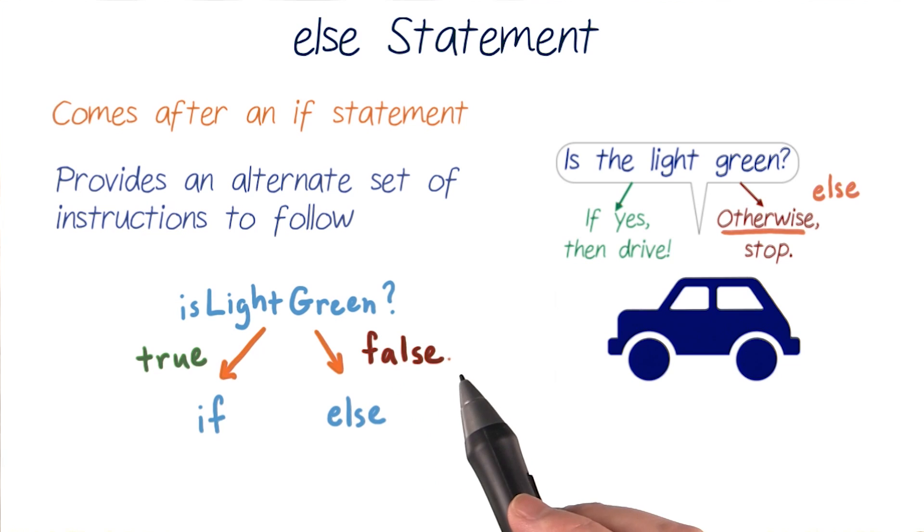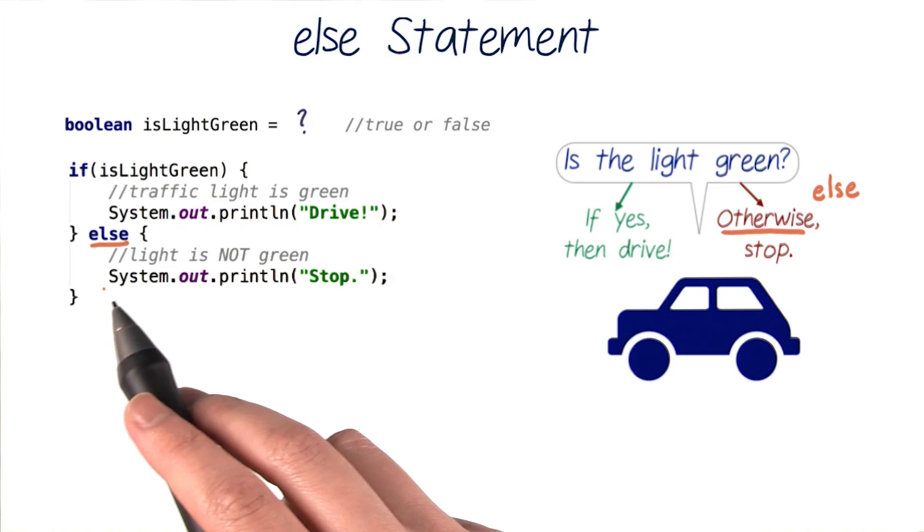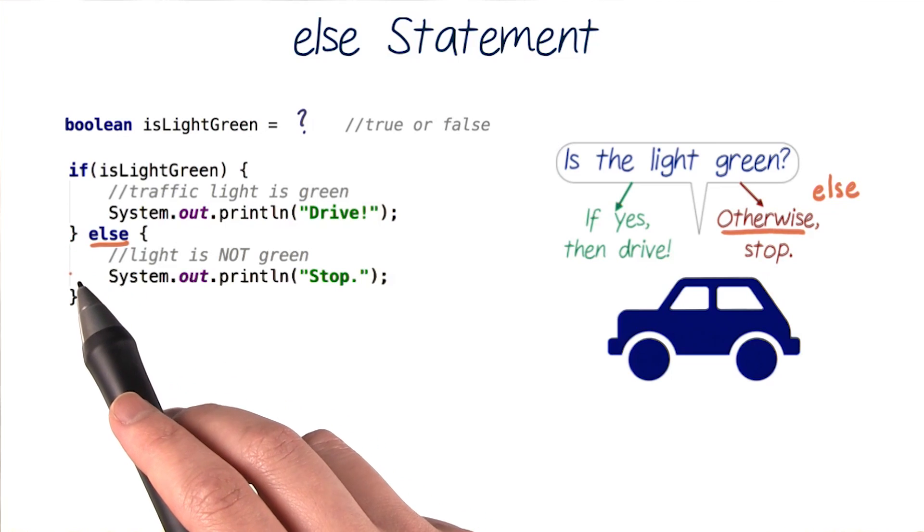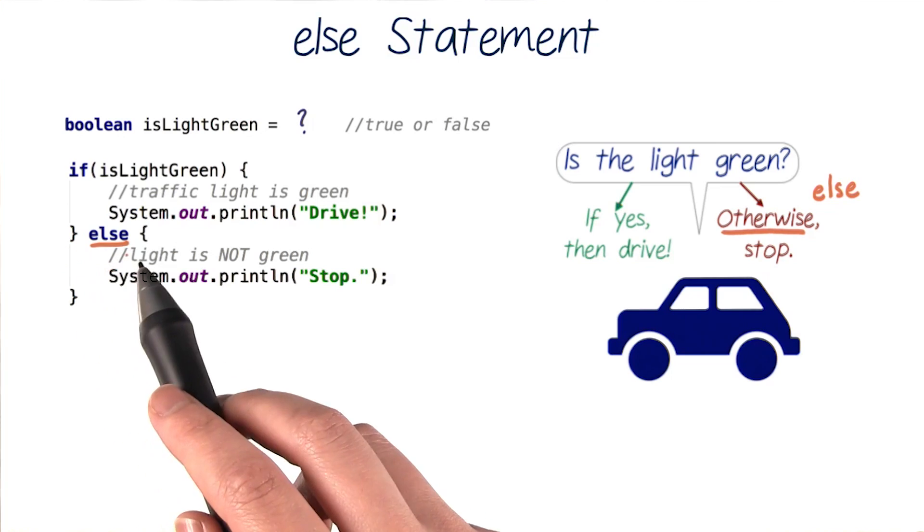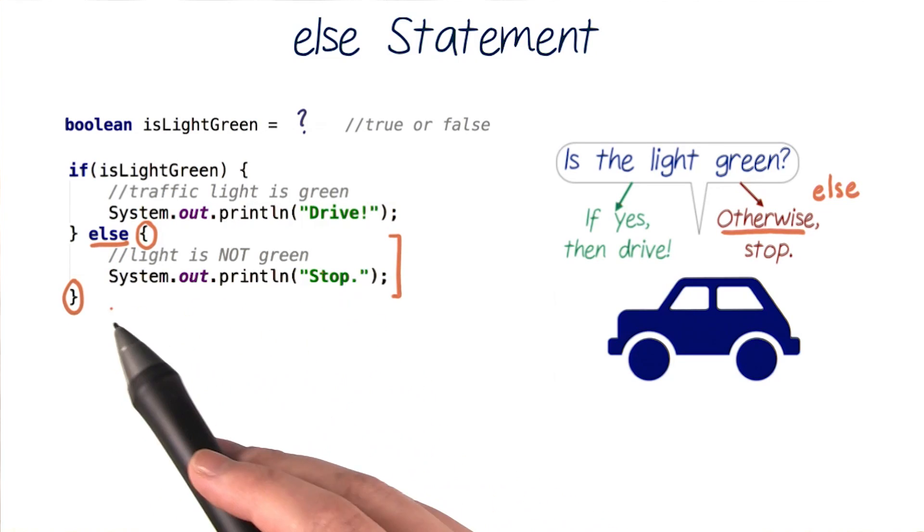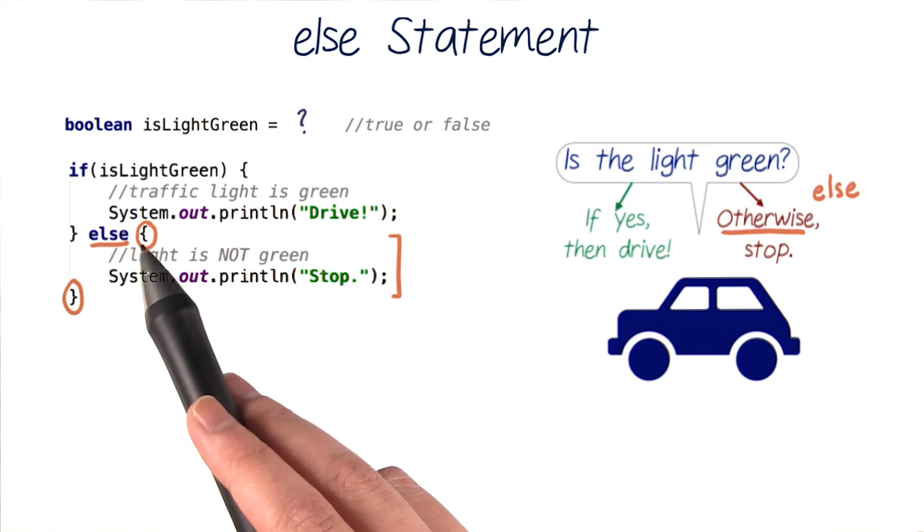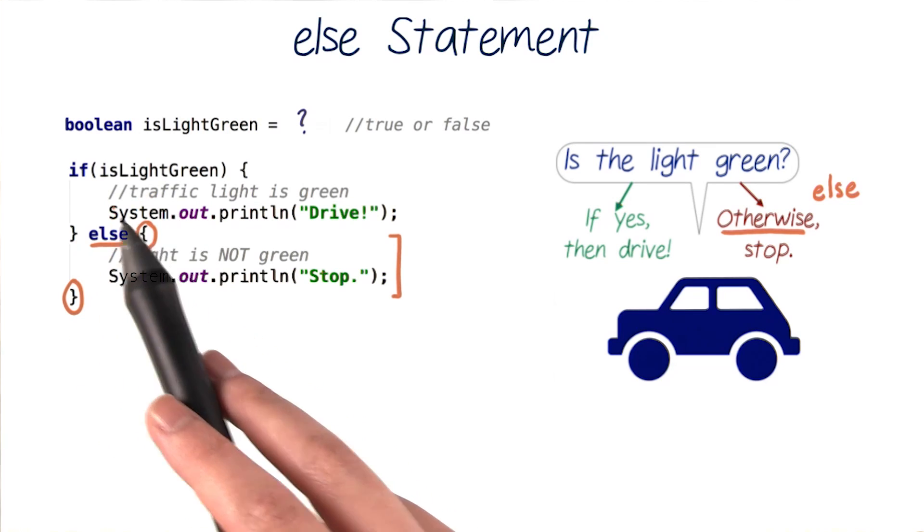So let's see how to write an else statement. Here's our else statement. Instead of having no code after our if statement, we just write else after the end of the if's closing curly brace. And then the code we want to execute in the else will be surrounded by curly braces. Notice that the else statement has no test condition associated with it, like the if does.